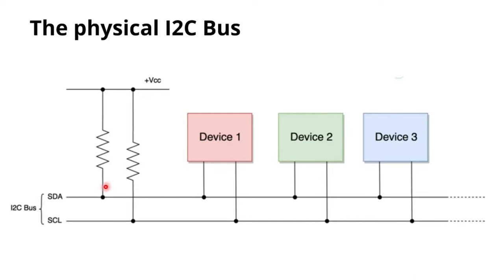The I2C bus uses serial clock and serial data lines. Initially they were designed with open-collector configuration, meaning the collector does not have any resistor. That's why we connect external pull-up resistors — one to SCL and another to SDA — to keep the bus lines high by default. We always connect external resistors of 4.7 kilo-ohms. We can connect as many devices as needed using these two lines.